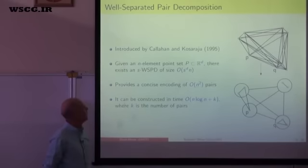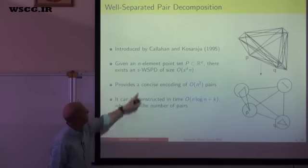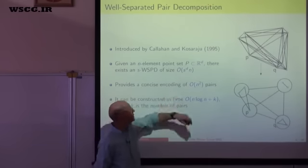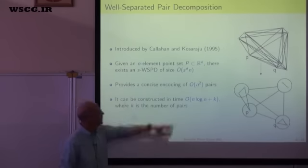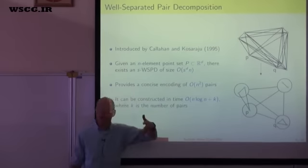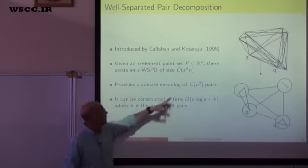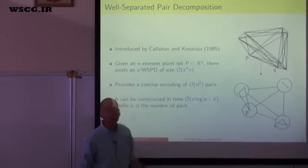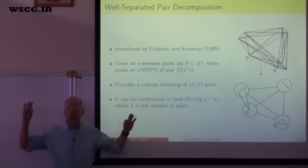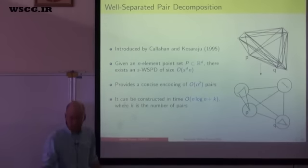The concept of the well-separated pair decomposition was introduced by Callahan and Kasaraju in 1995. The important result is that given any N-element point set in D-dimensional space and any value S, the number of pairs you need in a well-separated pair decomposition grows linearly in N. The normal number of pairs is N-choose-2, which is quadratic. But if you only look at well-separated pairs, you can always find a linear number of pairs — with a dependence on S, because as S gets bigger, the pairs have to be more well-separated and you need more pairs to represent things.